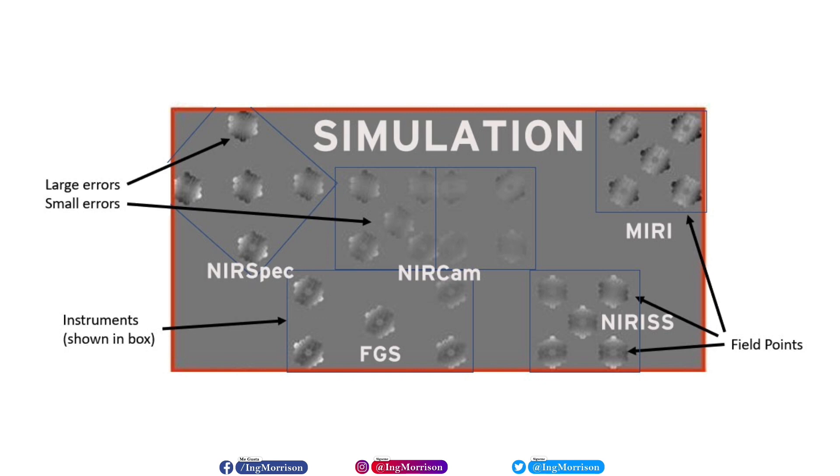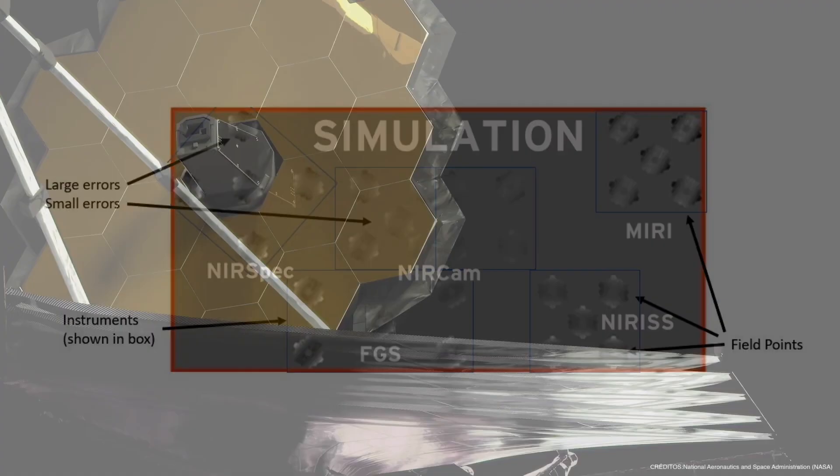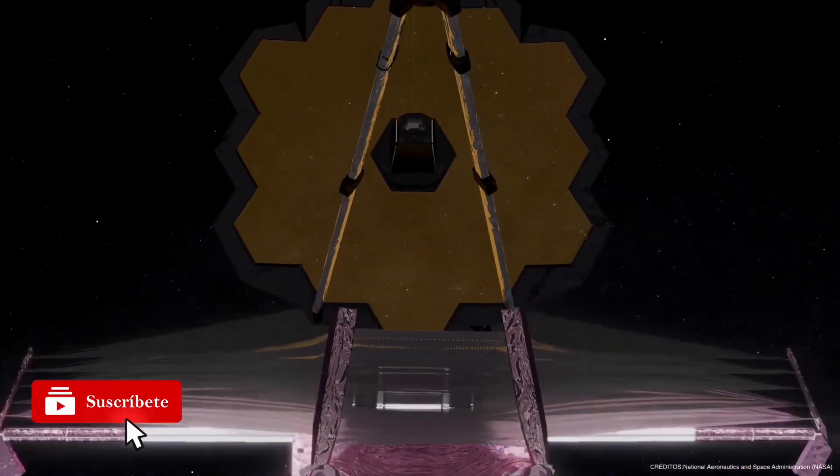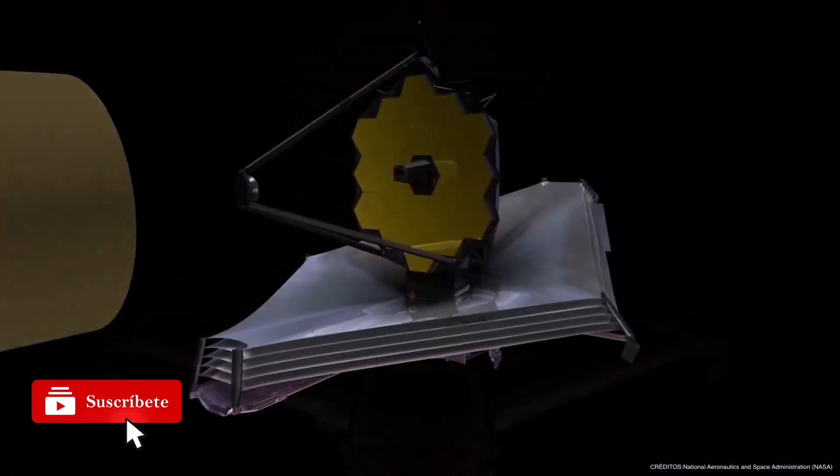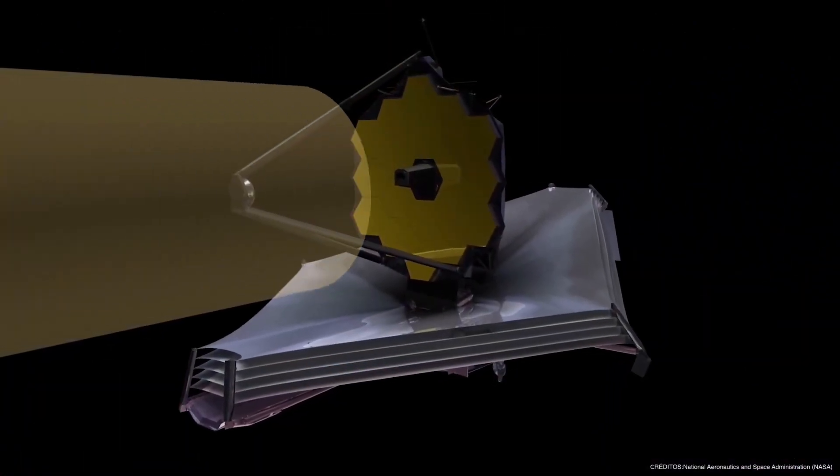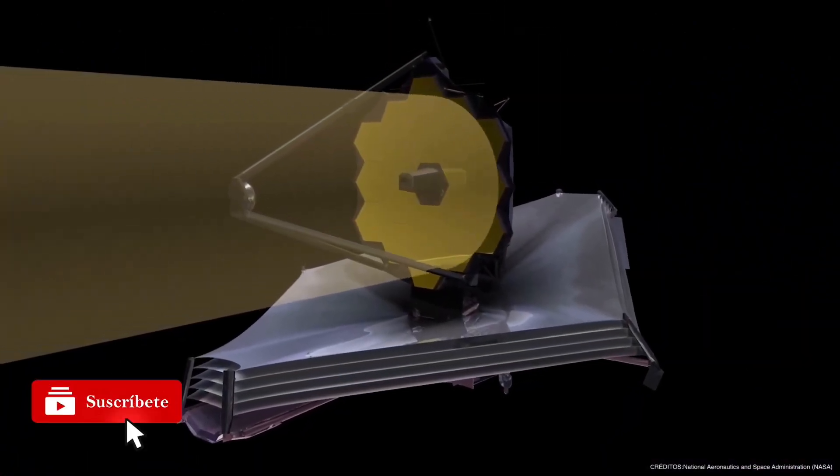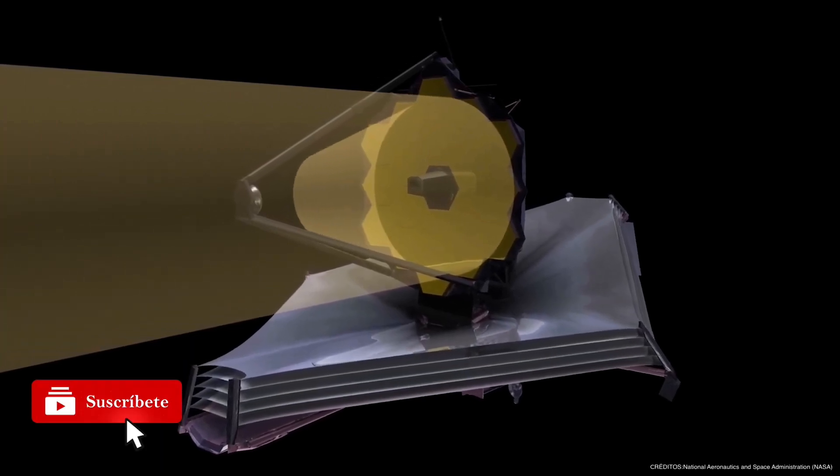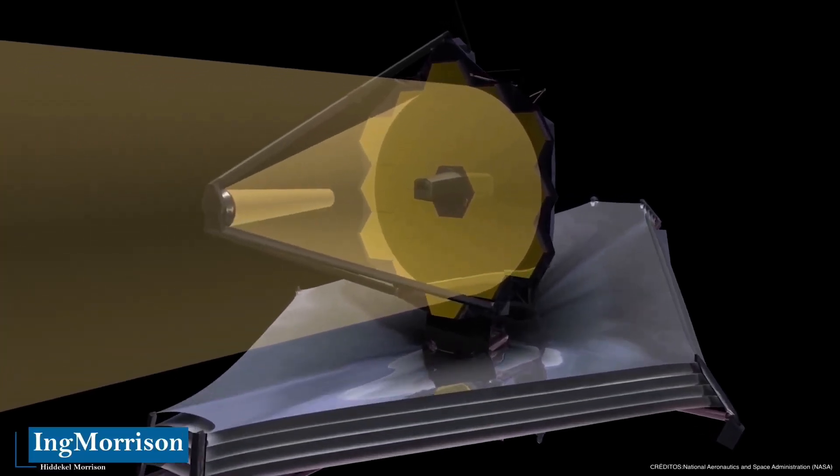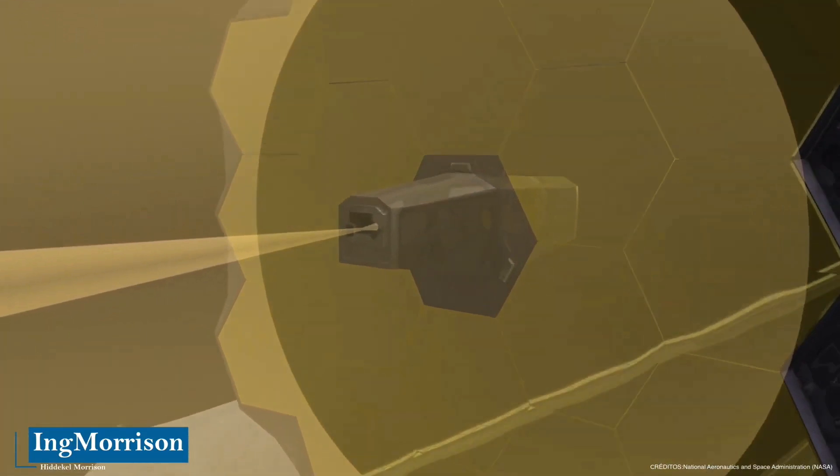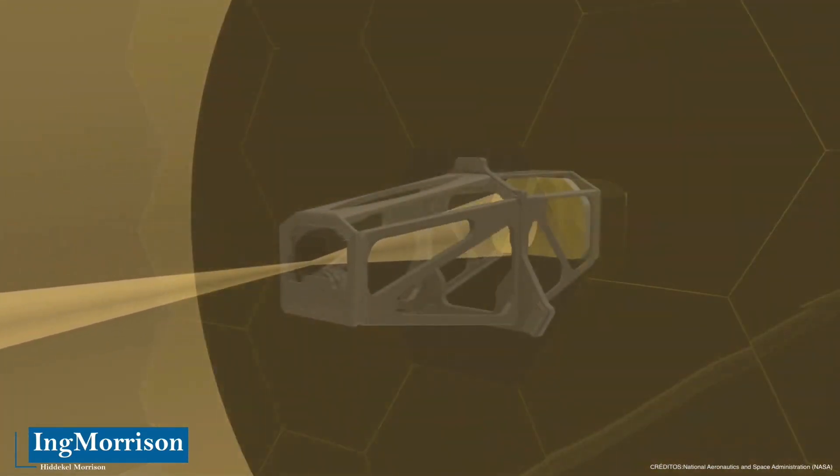The fifth step is the fine adjustment, which will also be done three times, right after each course adjustment. This process will also be repeated as needed throughout the life of the web. During the sixth step, the team will take the field alignment of the near-infrared camera instrument and apply it to the rest of the instruments. An algorithm will be used to calculate the necessary corrections to align all science instruments.